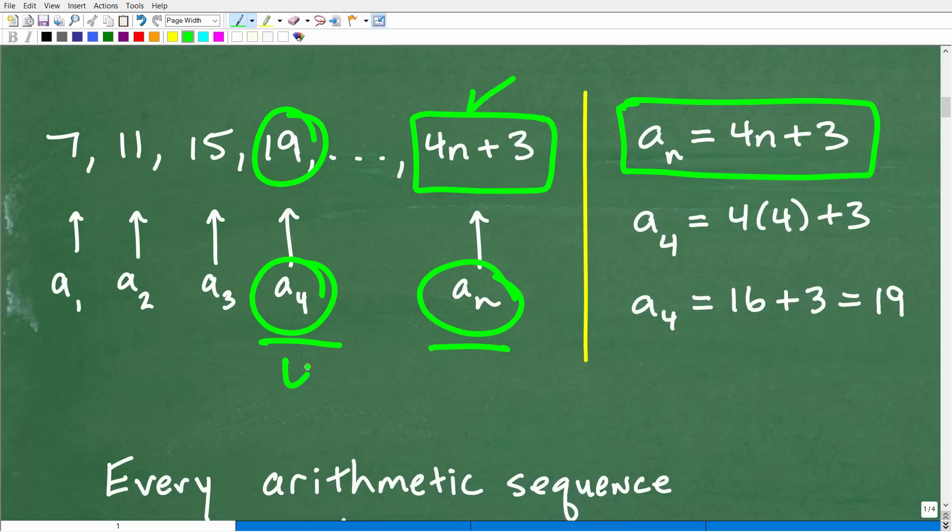So here it is. a sub n is equal to 4n plus 3. So this will give us the value of any term. So in this case, we want the fourth term in this sequence. So we want a sub 4. So we're going to replace the n. n here is the term. So we want the fourth term. So n is equal to 4. So we're simply going to follow this formula. 4n plus 3. So 4 times 4 plus 3. So 4 times 4, of course, is 16. 16 plus 3 is 19. So the value of the fourth term is 19. And, of course, we could see that.